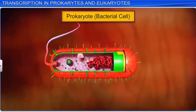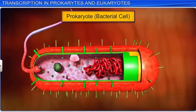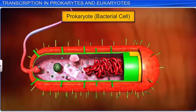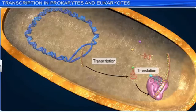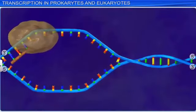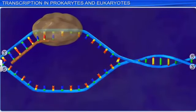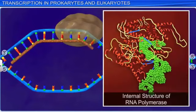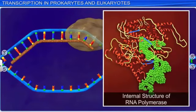Now let's learn how transcription takes place in prokaryotes such as bacteria. The prokaryotic cell does not have separations in terms of cytoplasm and nucleus. Therefore, both transcription and translation processes involved in protein synthesis can take place inside the prokaryotic cell at the same time. In prokaryotes such as bacteria, only one DNA-dependent RNA polymerase enzyme catalyzes the transcription of all types of RNA.